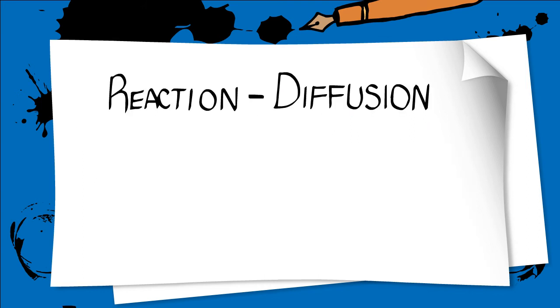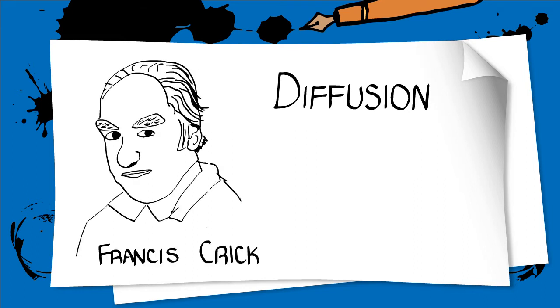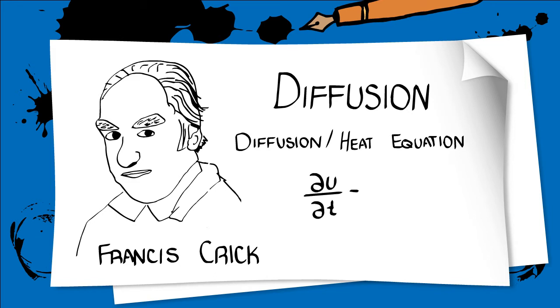Let's try our best to model this process using just diffusion. In fact, Francis Crick was the first to propose a diffusive model as a plausible way of setting up these gradients. His model was effectively the heat-diffusion equation, which we derived earlier for Brownian motion. That is, du/dt equals D times uxx, where D is the diffusion constant.